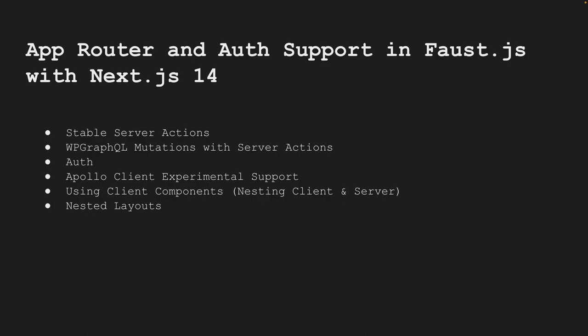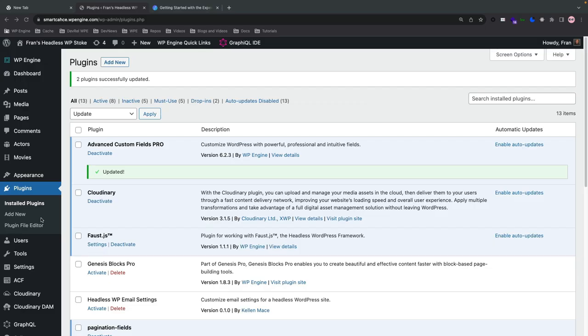Next.js 14 introduces a new paradigm in the project structure and development of sites and applications. With the new version of Next being adapted, the Faust team also decided to coincide to support this. In this video we're going to go over these bullet points: an overview of stable server actions, WP GraphQL mutations with server actions, auth, Apollo Client experimental support using client components, and nested layouts.